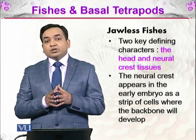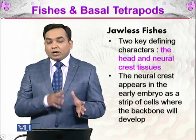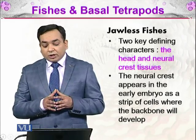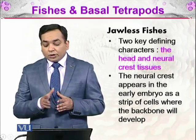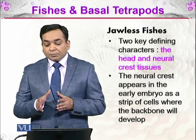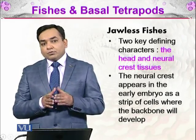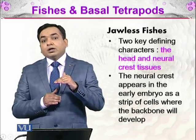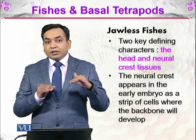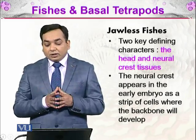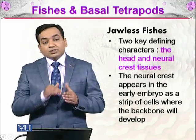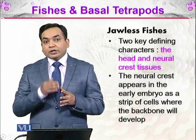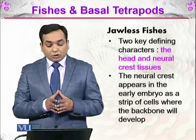The next thing which differentiates vertebrates from other animals is the neural crest. The neural crest appears in the early embryo as a strip of cells where the backbone will develop. Just beneath the skin at the ectoderm, a crest or strip of cells will appear which will later develop into the vertebral column.